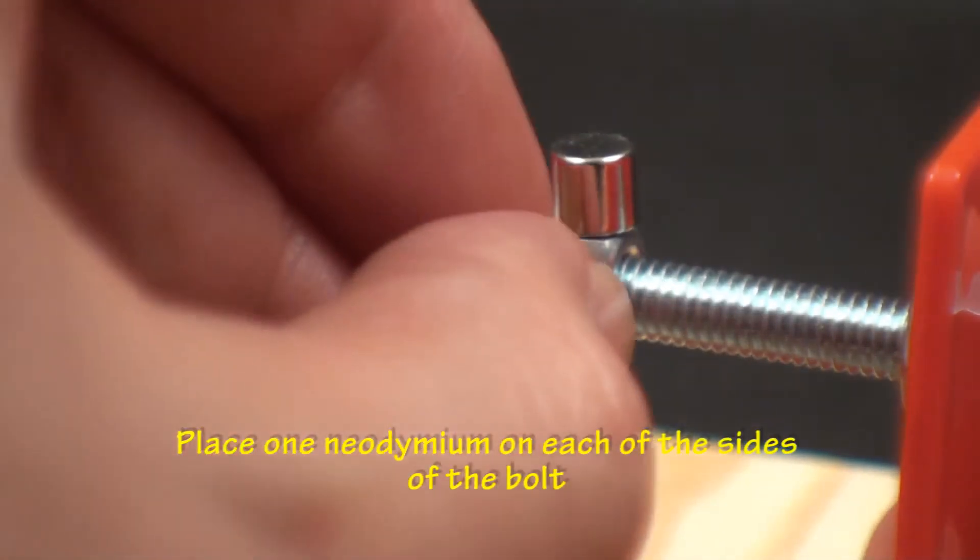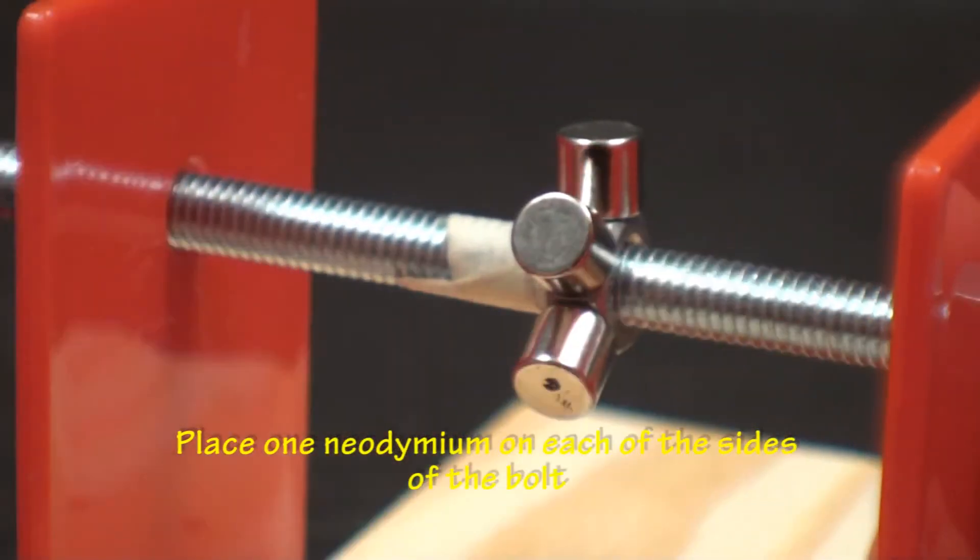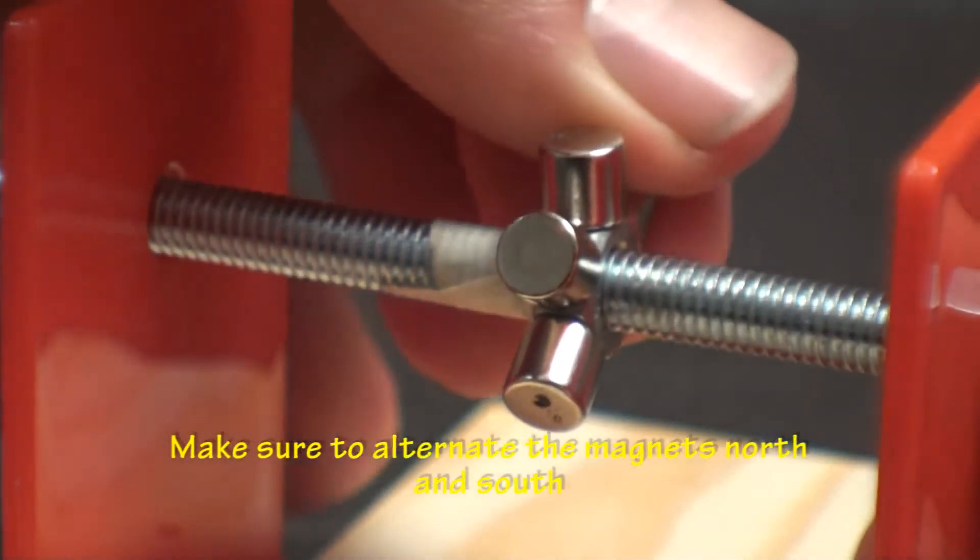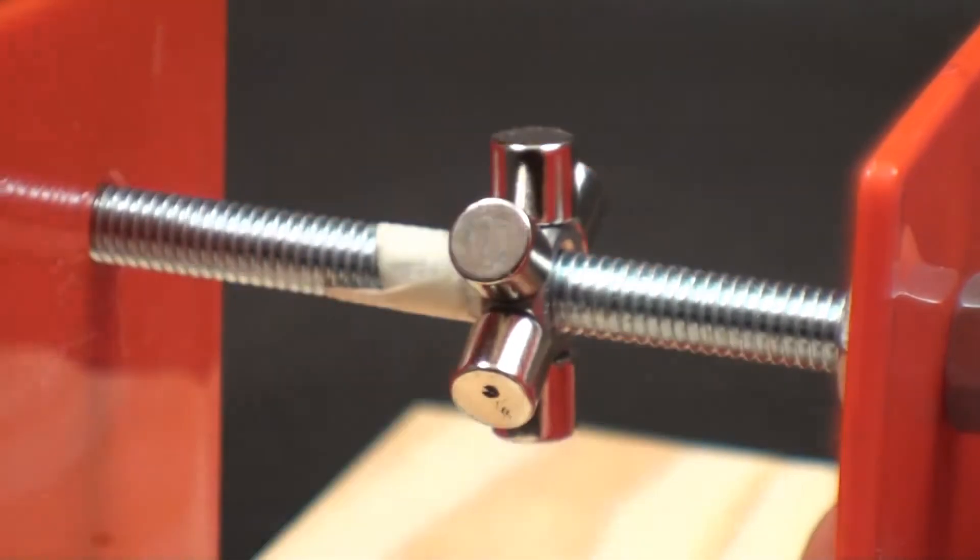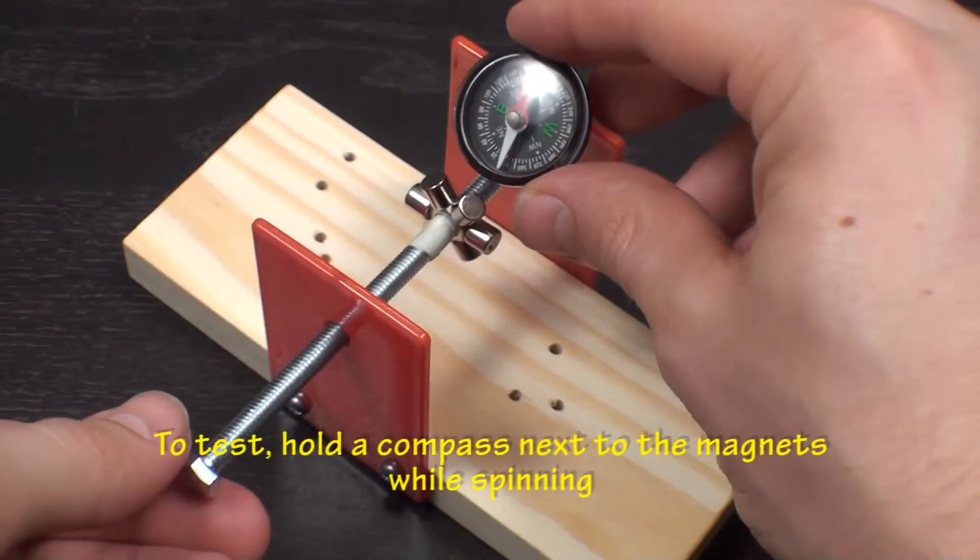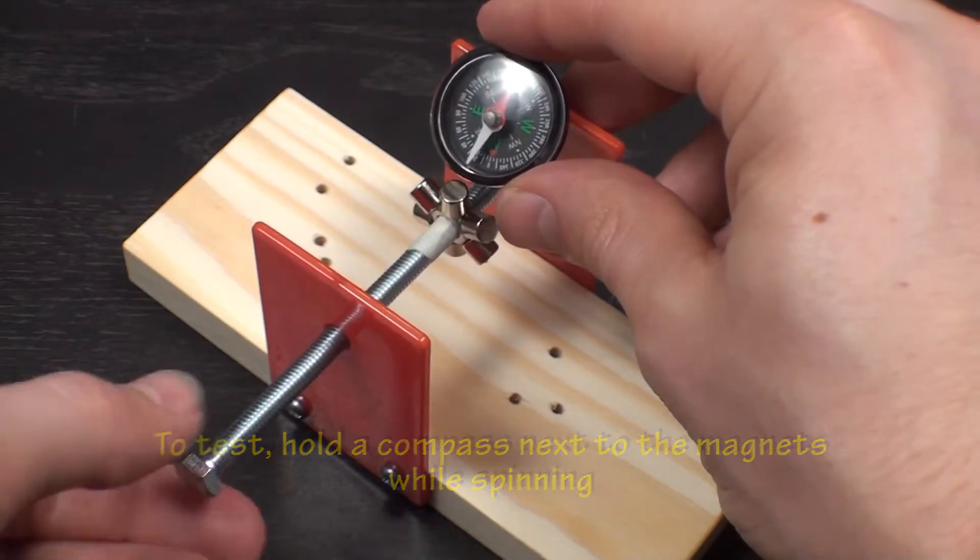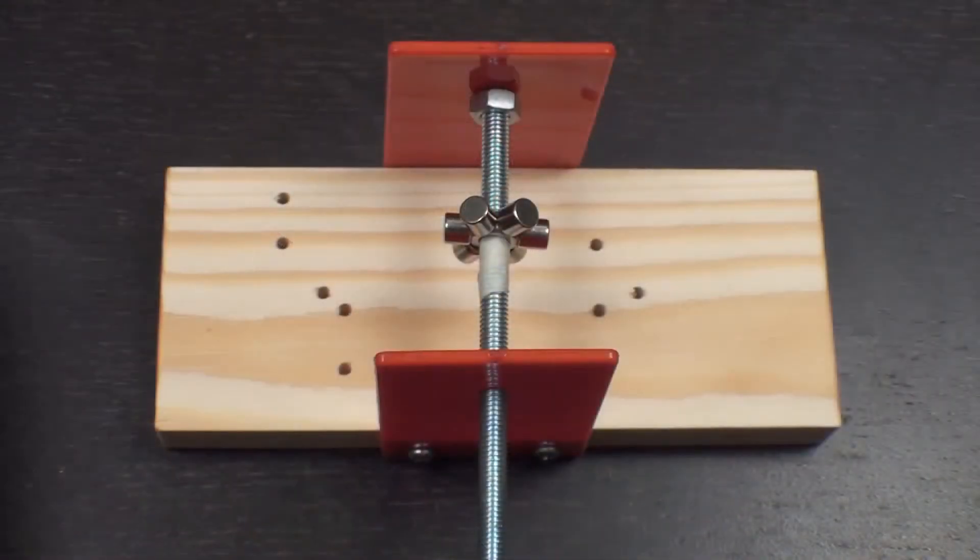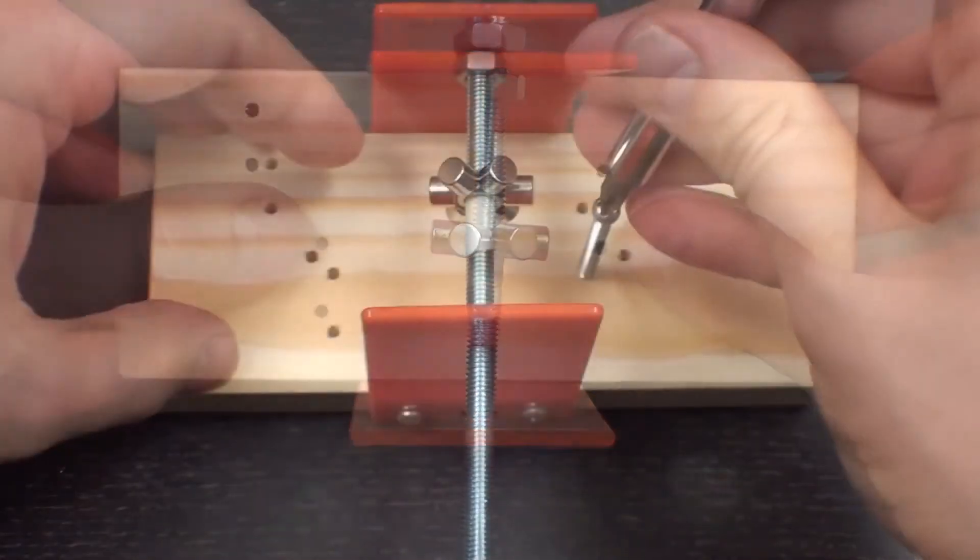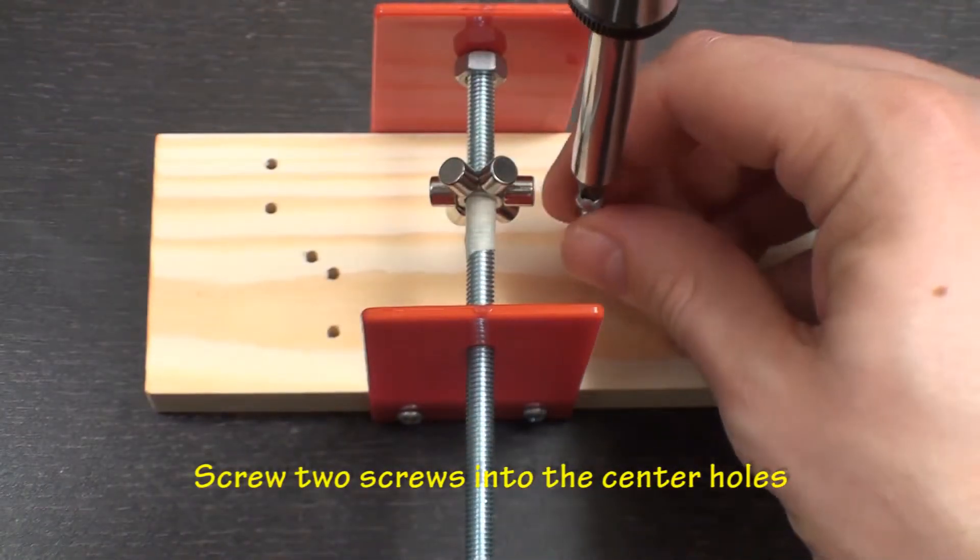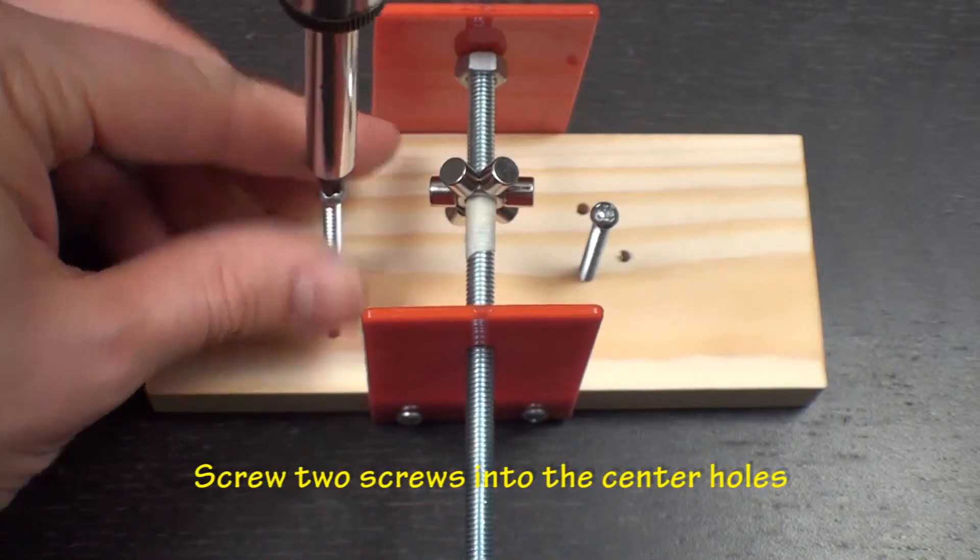Place one neodymium magnet on each side of the centered nut. Make sure to place the magnets alternating north and south. Be careful as the magnets are very powerful. You can test to see if they alternate by spinning the bolt with a compass next to the magnets. Make sure the magnets are lined up with 2 of the holes in the center of the wooden block. Screw the 2 medium length screws into these 2 holes. They will be used to hold the coil in place.